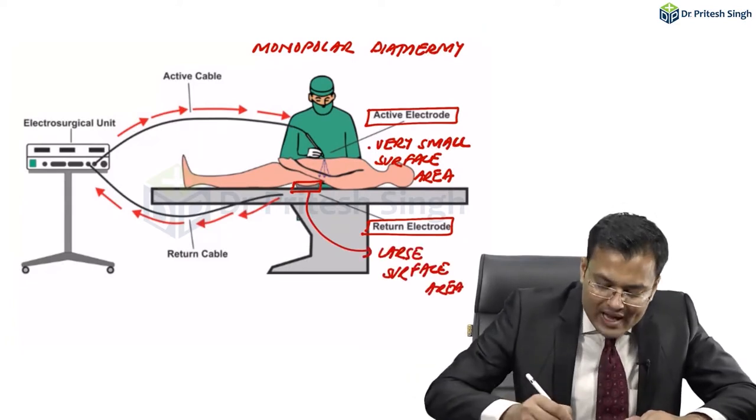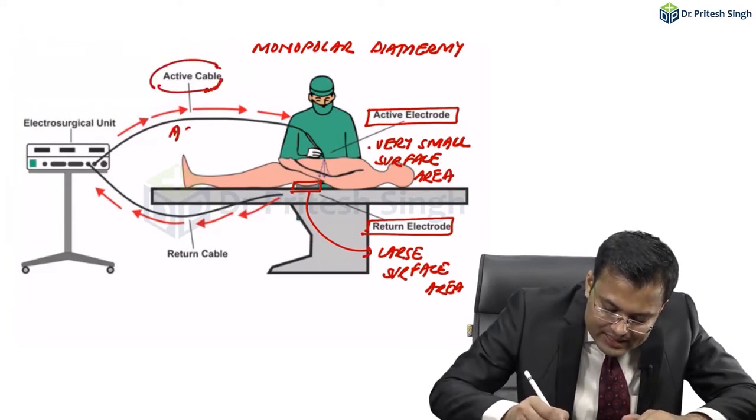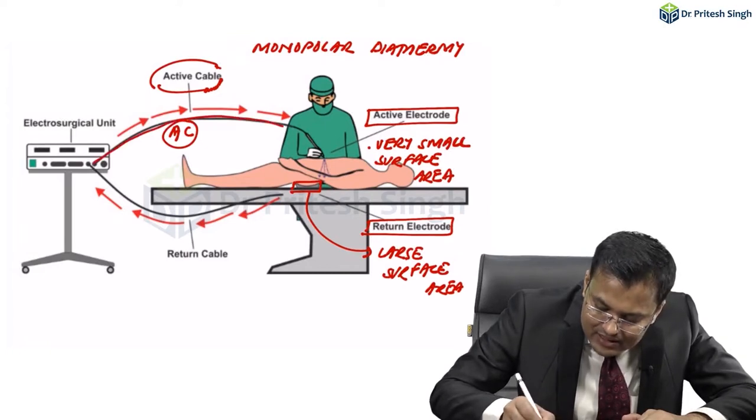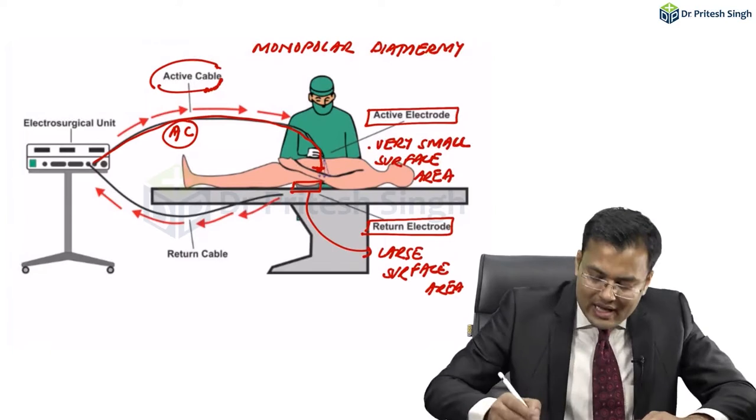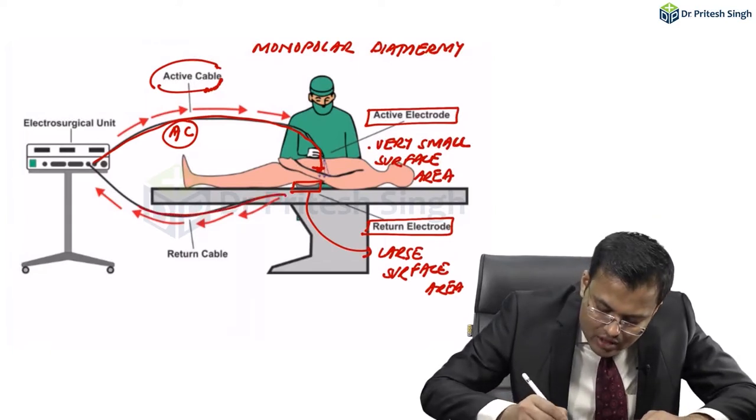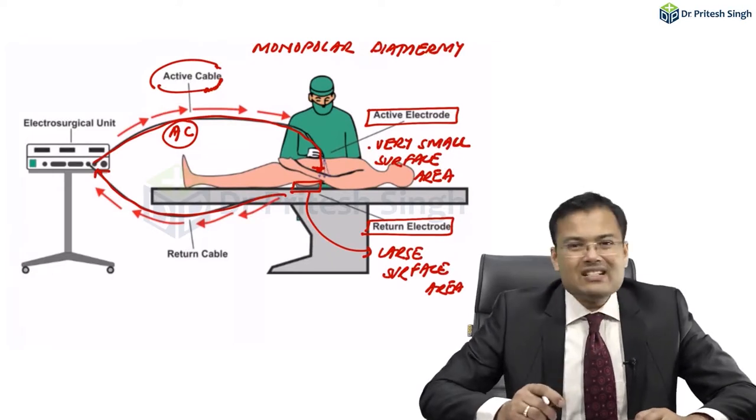Via the active cable, alternating current is transferred to the patient through the active electrode and it goes back via the passive electrode through the return cable.